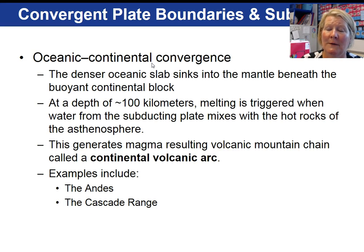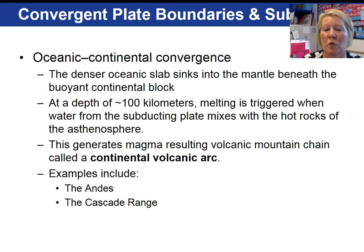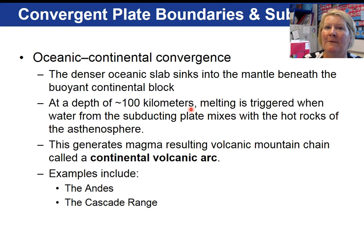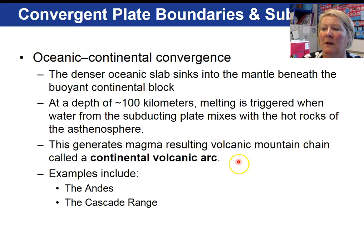Starting with oceanic-continental convergence: the ocean crust, because it is more dense, will subduct beneath the continent. At a depth of around 100 kilometers, the rocks in that zone are very close to their melting points. When water is driven off the subducting slab due to increased temperatures, it lowers the melting point of the surrounding rocks, causing melting — we call that flux melting. As a result, magma may reach the earth's surface and create a continental volcanic arc. The Andes in South America and the Cascade Range of the northwest United States are examples of continental volcanic arcs, where ocean crust is diving beneath the continent.